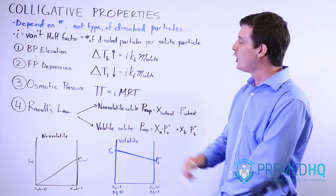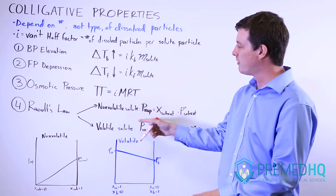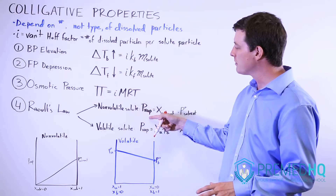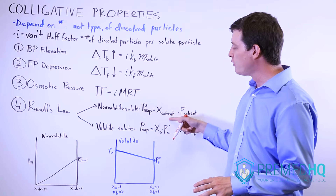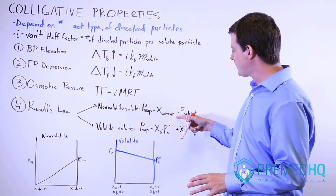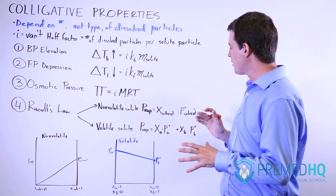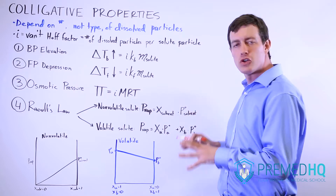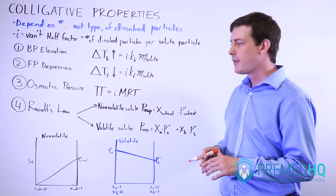The non-volatile solute form of Raoult's Law states that the vapor pressure equals the mole fraction of the solvent times the vapor pressure that would exist over the pure solvent at that temperature.